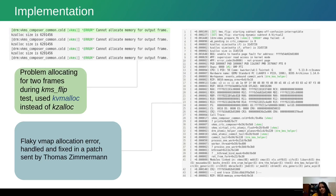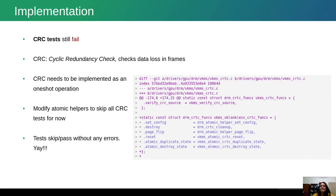Thankfully, the vmap error was solved by Thomas Zimmermann, who fixed it in his patch for using shadow buffers in VKMS. The error disappeared after a rebase. However, the CRC tests still failed. Since our CRC is calculated around vertical blanking interrupts, and we had disabled the vertical blanking interrupts, all the CRC tests were failing.